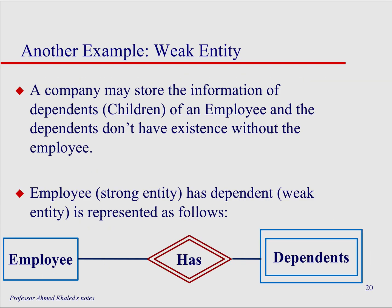Here's another example: employee has dependents. Dependents is obviously a weak entity because it depends on the employee. If you don't have an employee entity, there's no reason to keep track of their dependents. That's why the relationship also uses the double diamond notation — it represents the relationship between the weak entity and its strong entity.